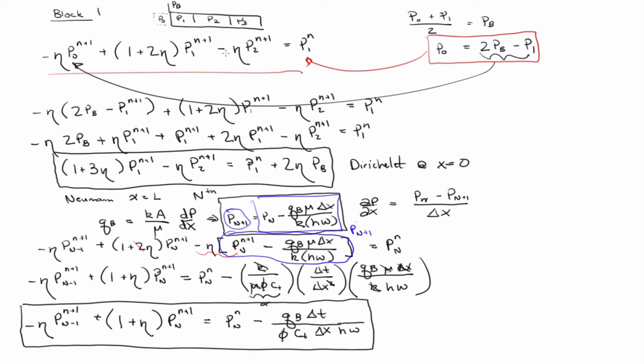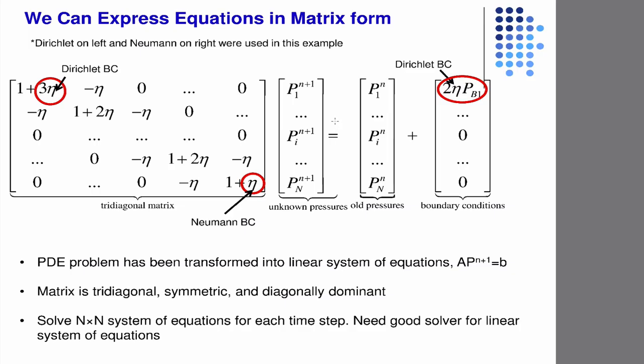So in the notes, after some derivations, you got to a system of equations written in matrix form like this. And so, again, these assume Dirichlet on the left-hand boundary at x equals 0, Neumann on the right-hand boundary. But I think in your homework problem number two, it's the opposite. It's the opposite.